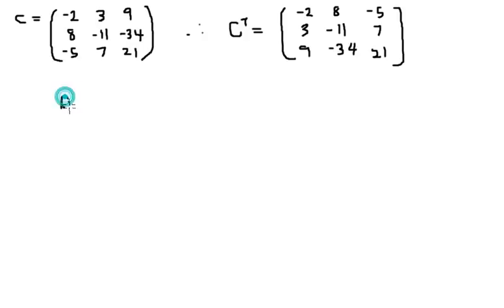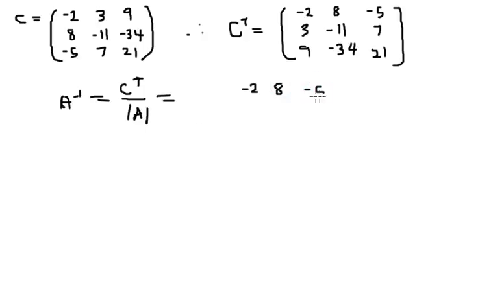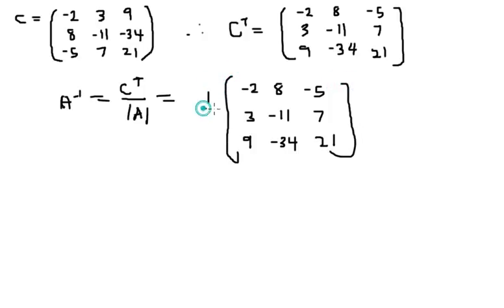Applying the formula, the inverse of A equals the transpose of the cofactor divided by the determinant. Since the determinant is 1, the inverse is simply the transpose of the cofactor matrix: minus 2, 8, minus 5 / 3, minus 11, 7 / 9, minus 34, 21. You can write 1 over 1 in front if you like, but since it equals 1 it can be left out. This is the solution to the inverse of a 3x3 matrix. Thank you very much for watching, I really hope you enjoyed it.